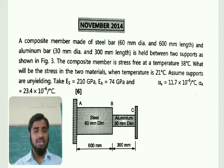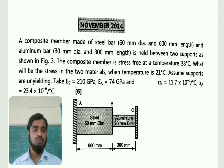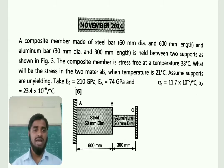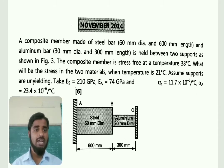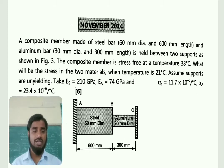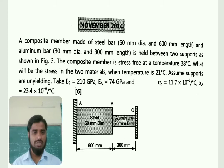First, read the example carefully which is asked in the university exam for six marks in November 2014. A composite member made of a steel bar 60 mm diameter and 600 mm length, and an aluminium bar 30 mm diameter and 300 mm length, held between two supports as shown in figure. The composite member is stress-free at a temperature of 38 degrees centigrade.